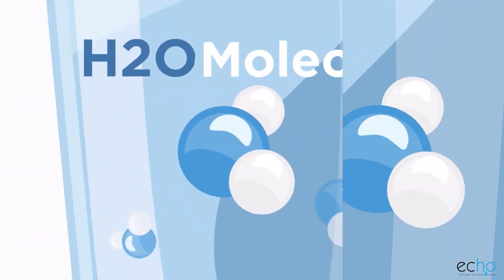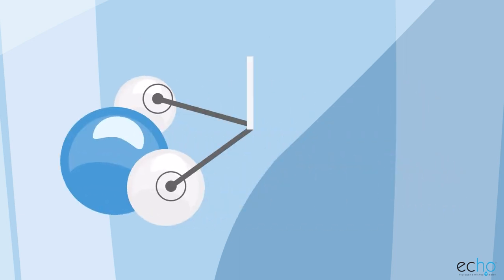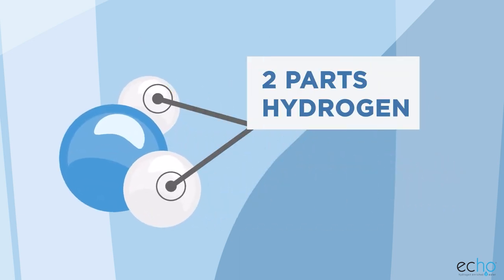Water molecules have one part oxygen and two parts hydrogen, and when they combine the two molecules turn into a liquid.